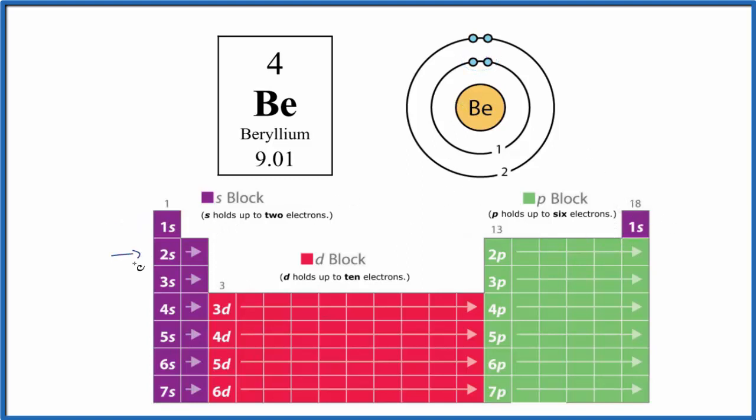Then we go to the second energy level, which is period two. We only have four electrons for beryllium. We've used two, so we have two more in the second level. That's a total of four.